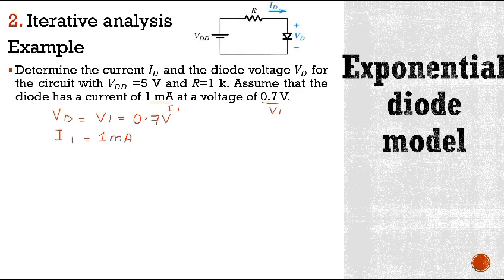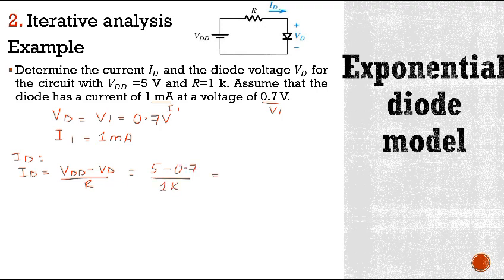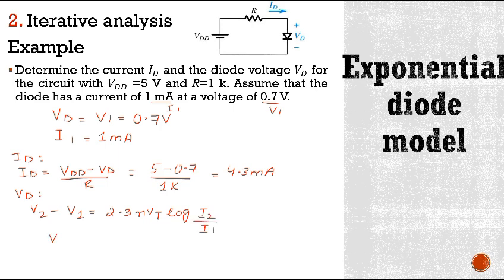Now we will find id, the diode current. Using the KVL equation: id equals (Vdd minus vd) divided by R. Here Vdd is 5 minus 0.7, divided by 1 kilo ohm, so we get 4.3 milliamperes. Now to find vd, we use the equation derived earlier: v2 minus v1 equals n times vt times log(i2 divided by i1), or v2 equals v1 plus 2.3 times n times vt times log(i2 divided by i1).